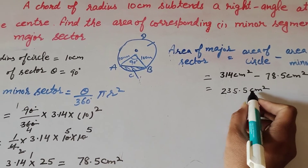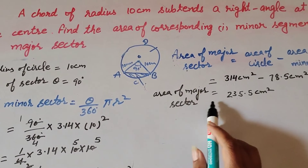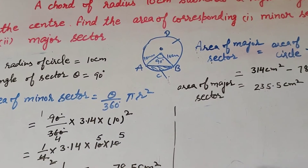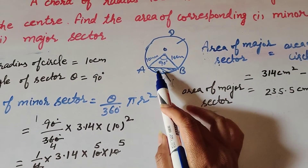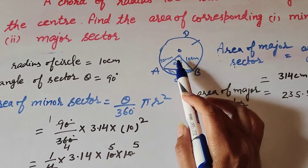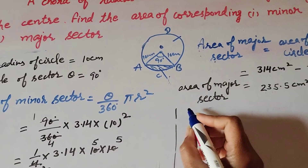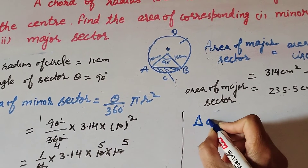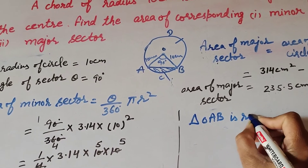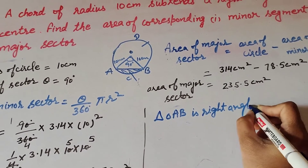Area of major sector equals 314 minus 78.5, which equals 235.5 cm squared. Now we find the area of minor segment ABC. To find the area of minor segment, first we find the area of triangle OAB. Triangle OAB is a right angle triangle because one of its angles is 90 degrees.